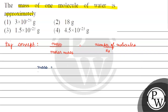So mass equals number of molecules — which we set as 1 — divided by Avogadro's number, 6.022×10²³ mol⁻¹. Now we need the molecular mass of water.